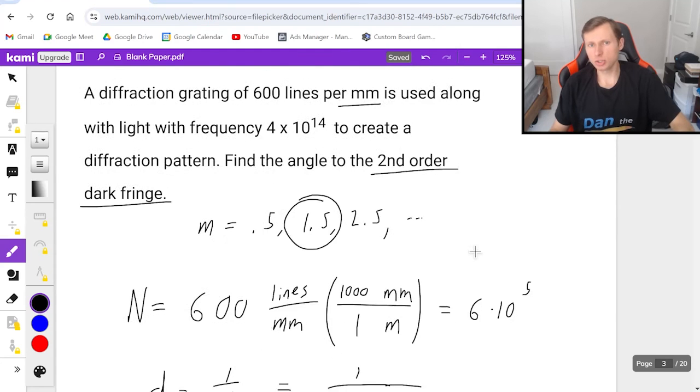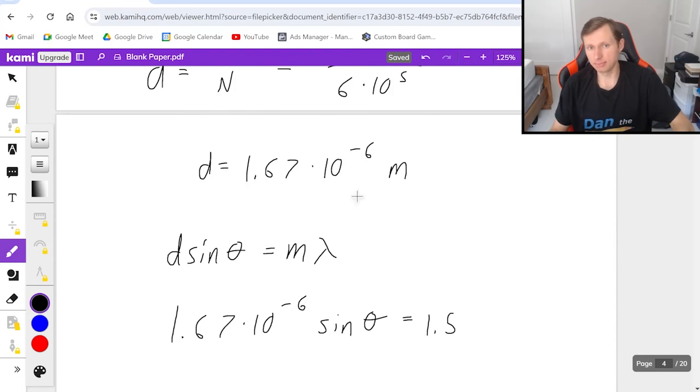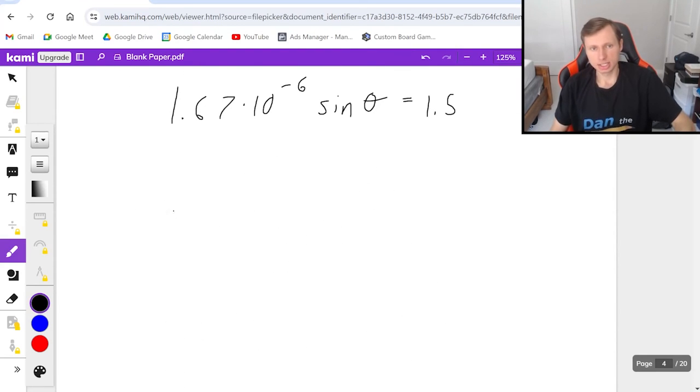And finally, lambda, which is also not easy to find, because they gave me the frequency, 4 times 10 to the 14th, which means I need to solve for lambda, using the equation C equals lambda times f. So that's 3 times 10 to the 8th equals lambda times my frequency, 4 times 10 to the 14th.